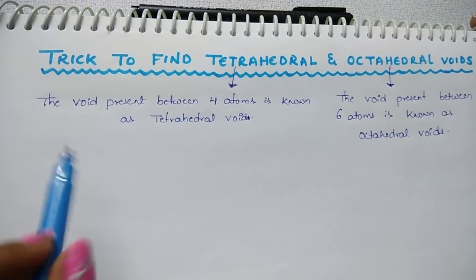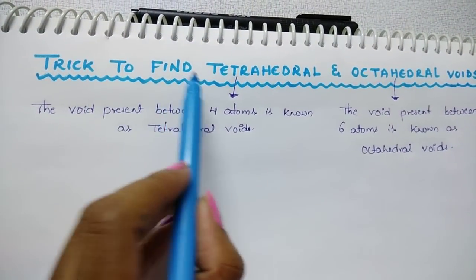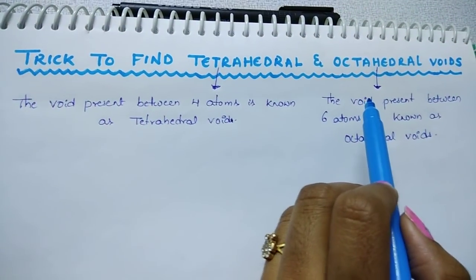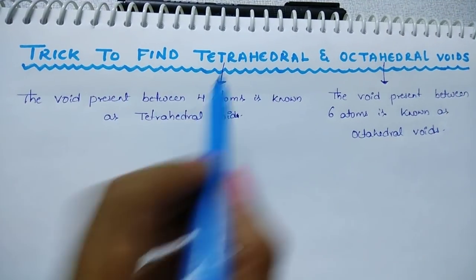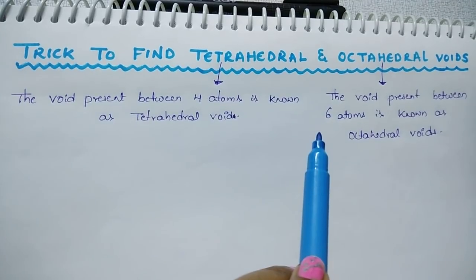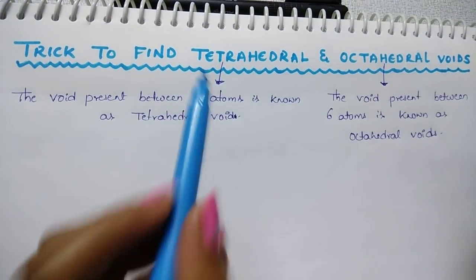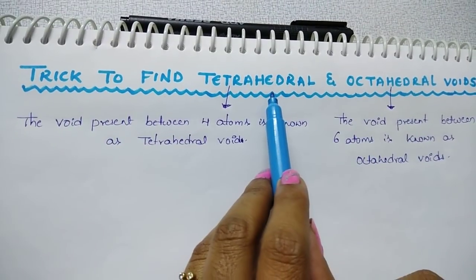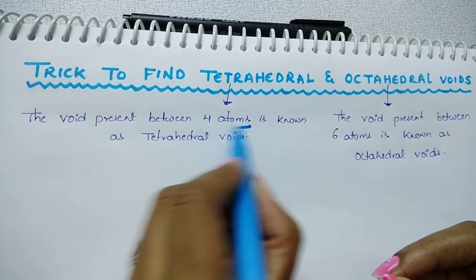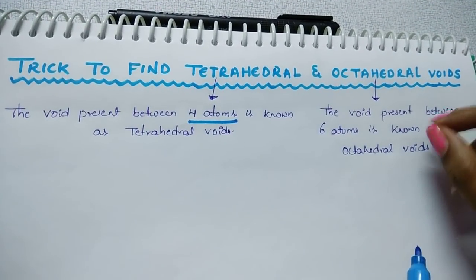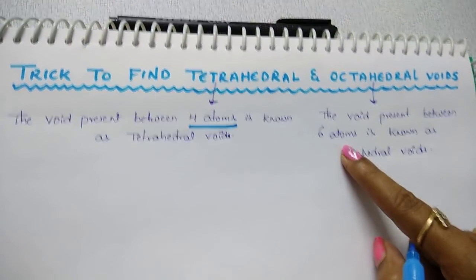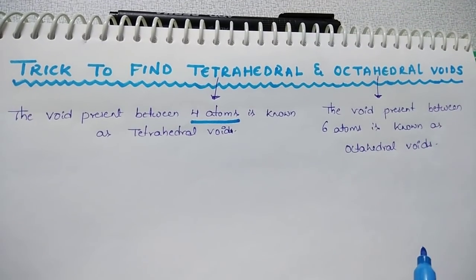In today's session I am going to discuss a trick to find tetrahedral and octahedral voids from the solid state chapter in Class 12 chemistry. Void means the free space or empty space present in the unit cell. Tetrahedral void means the void present between 4 atoms, and octahedral void means the void or free space present between 6 atoms.